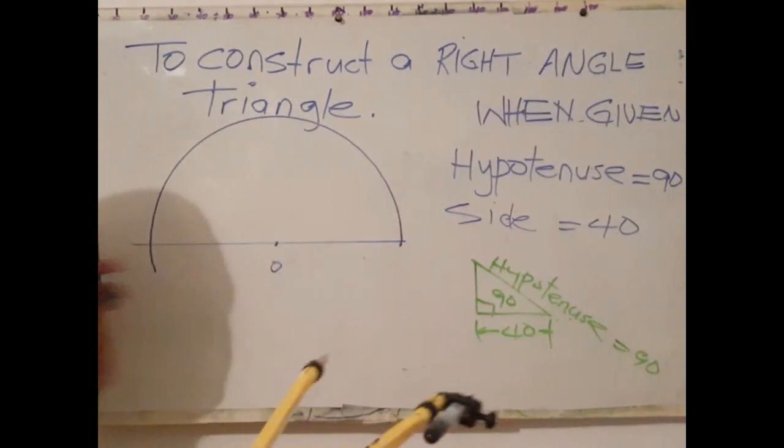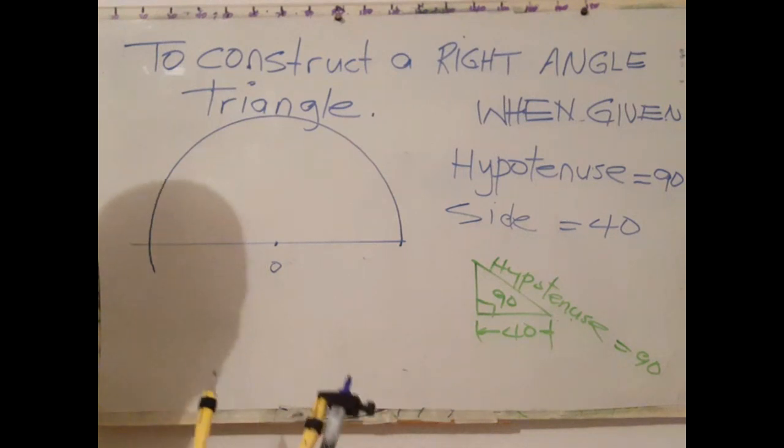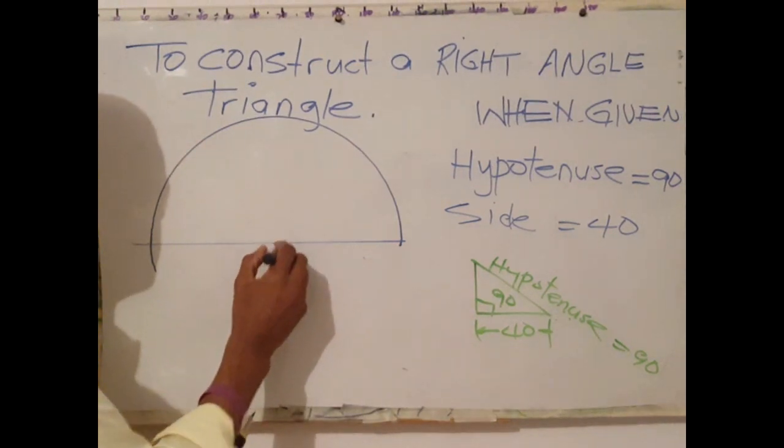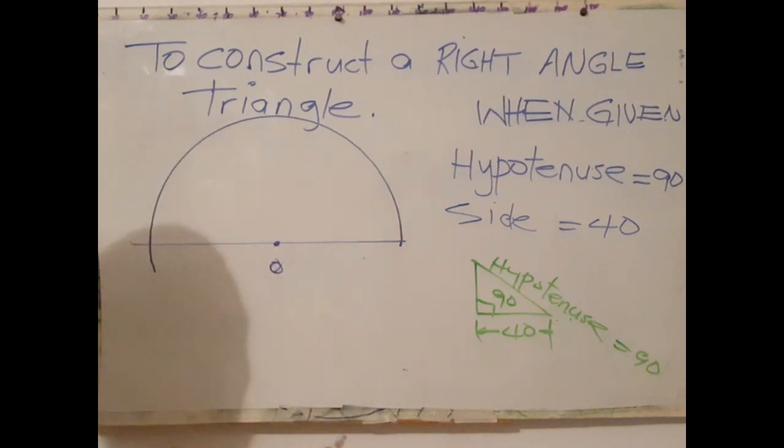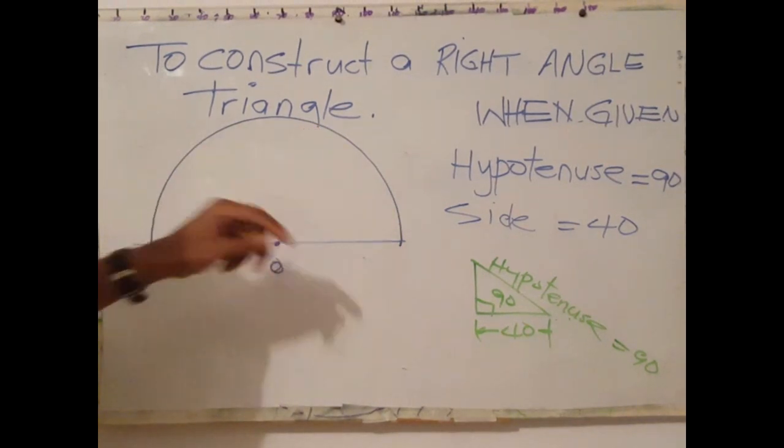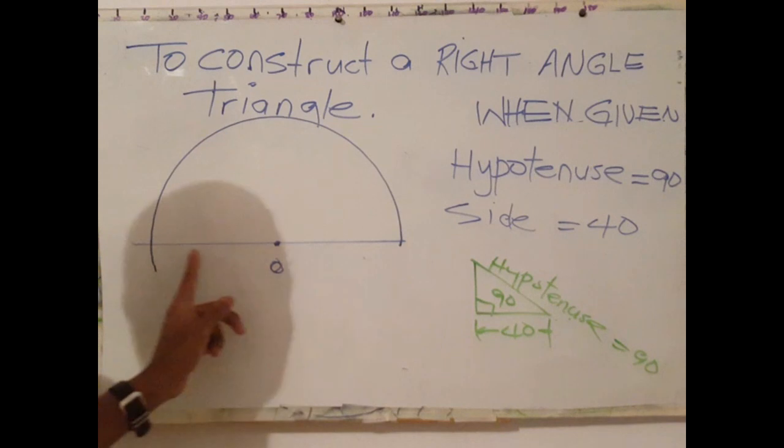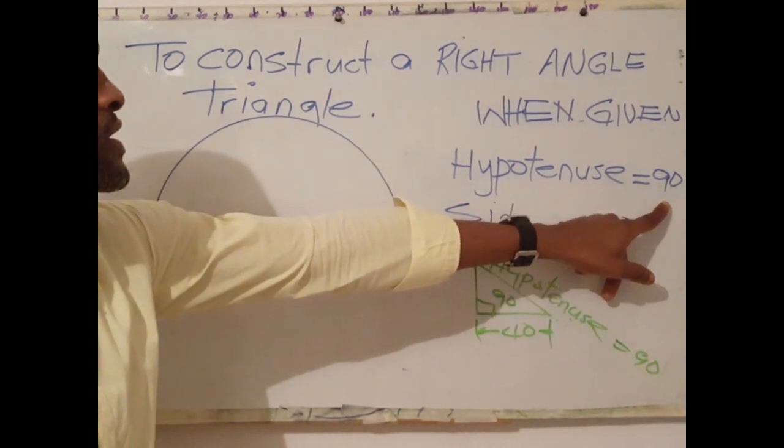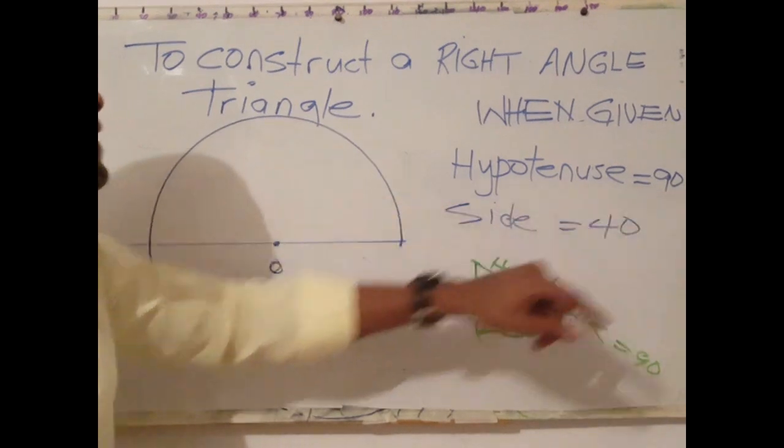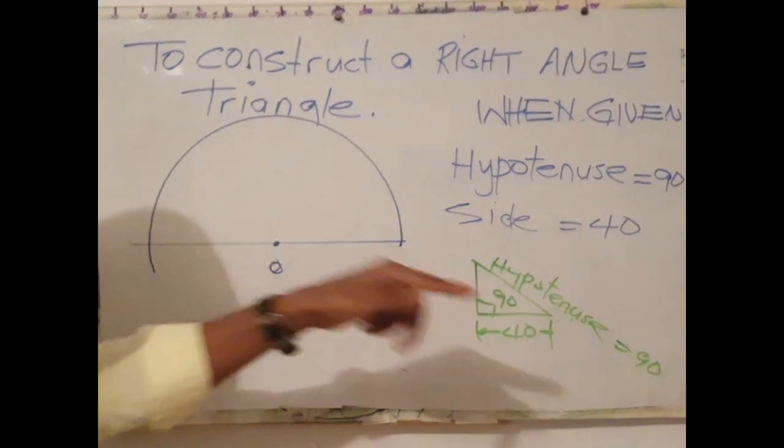So I first draw a random length line. Then I establish my starting point, which I now label O when it's a circular object. Next step I open my compass. I want the diameter to be the length of the hypotenuse, 90. So the radius of this is 45, which is half of the diameter.